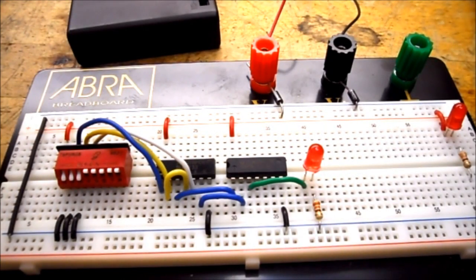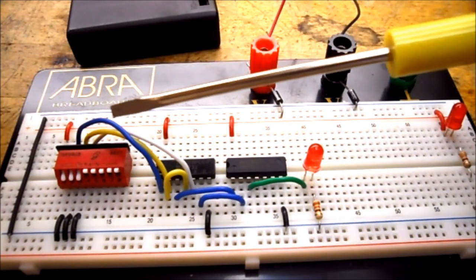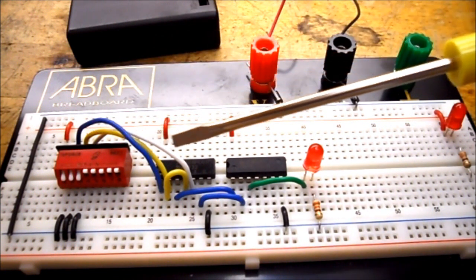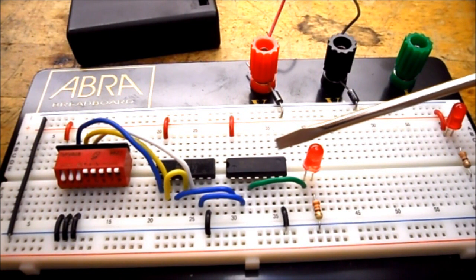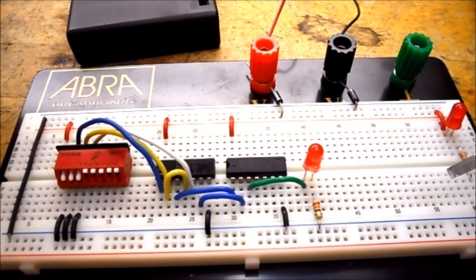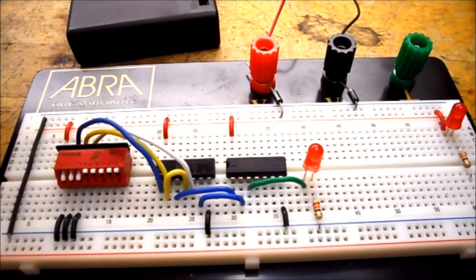So this is the setup for lab number four part A and it was in our lab number four video and today we're going to do some troubleshooting on the circuit. So I've introduced a few problems here that you might have. Looking at it you can see the dip switch, the 7408, 7432, everything looks wired up exactly as it was in the previous lab, but I've introduced a few problems that a student might make.